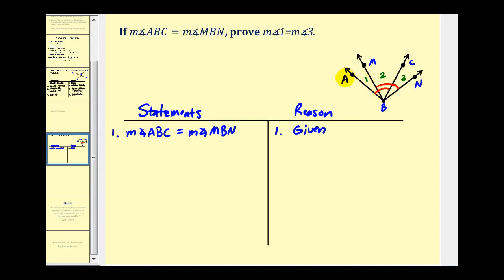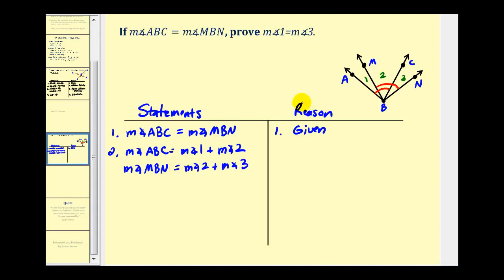The measure of angle ABC would have to equal the measure of angle one plus the measure of angle two, and the measure of angle MBN must equal the measure of angle two plus the measure of angle three. This comes from the angle addition property. Remember, our ultimate goal is to prove that the measure of angle one equals the measure of angle three.